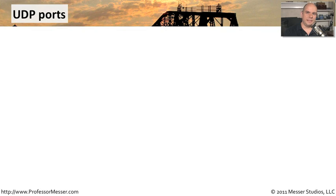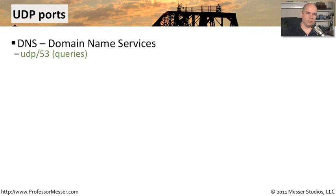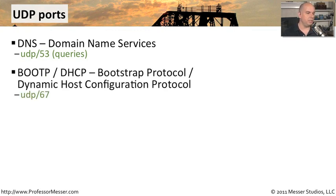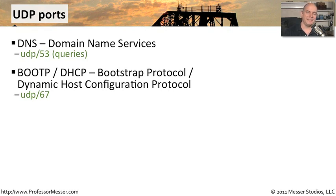Now let's focus on well-known UDP ports. DNS uses UDP port 53 for normal DNS lookup queries from your computer. When your machine starts up and uses BootP or DHCP — the Bootstrap Protocol or Dynamic Host Configuration Protocol — to automatically get an IP address, that uses UDP port 67.